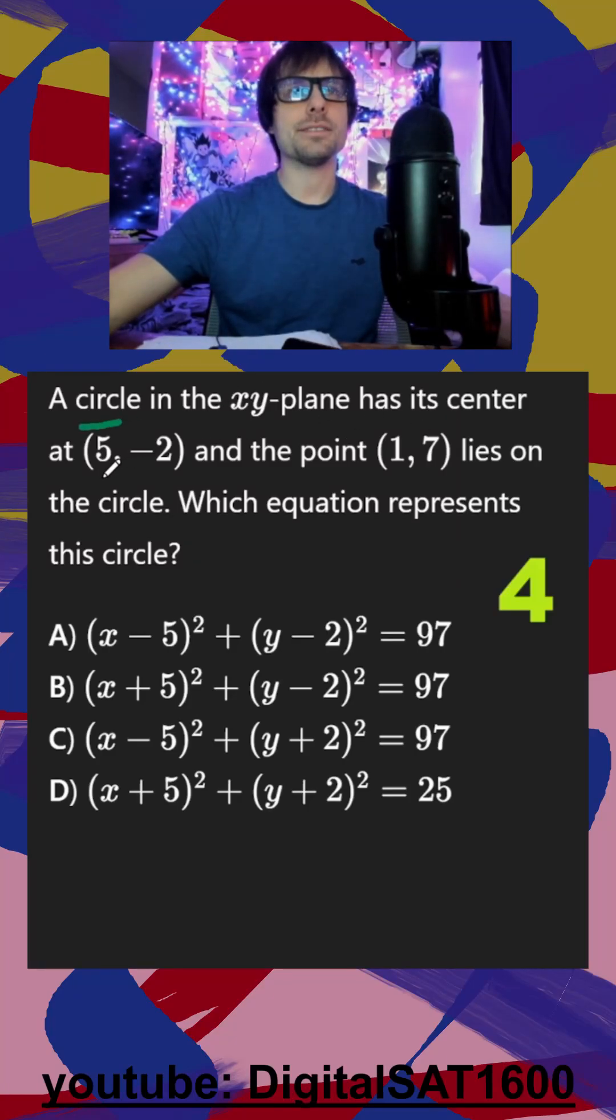We have a circle with its center at (5, -2). This is circle practice, and we're going to ignore the answer choices because we want to prepare for any type of answer.